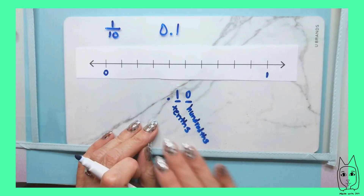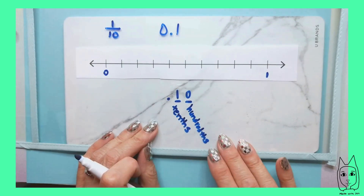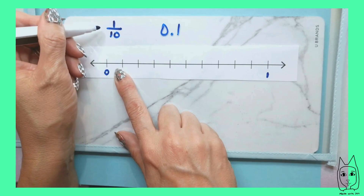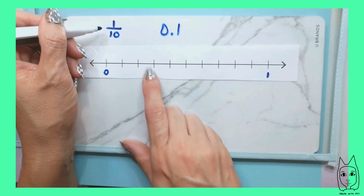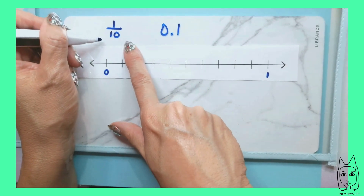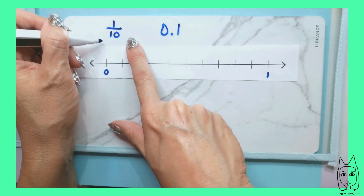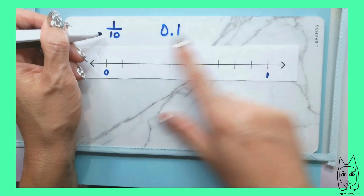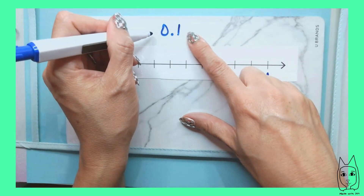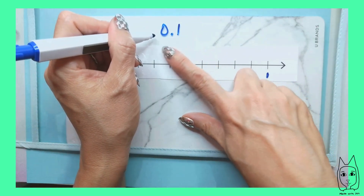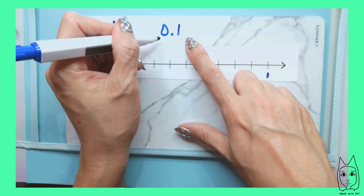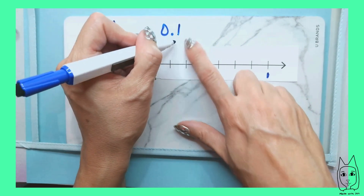For grade four, you are only going to the hundredths. You can either write each part as one over ten — the fraction — or now you can write it as a decimal. Zero point one is one-tenth.